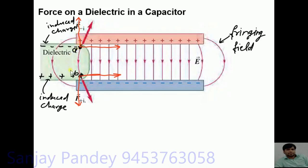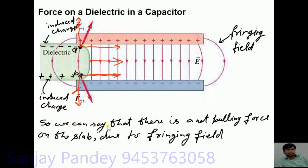Since the amount of induced charges at points A and B are equal, the perpendicular components cancel each other. There will be a net inward force which pulls the dielectric slab inside the capacitor. So we can say that there is a net pulling force on the slab due to the fringing field, and we will now calculate this net pulling force.